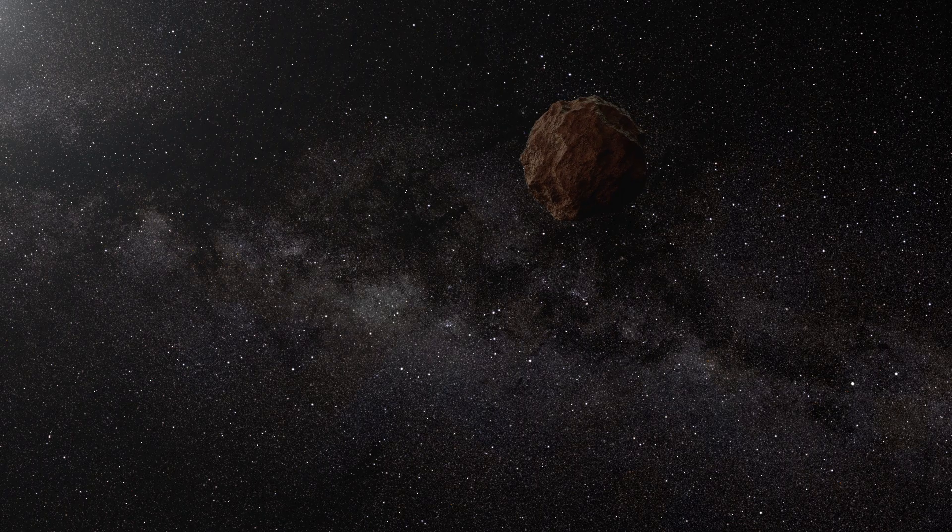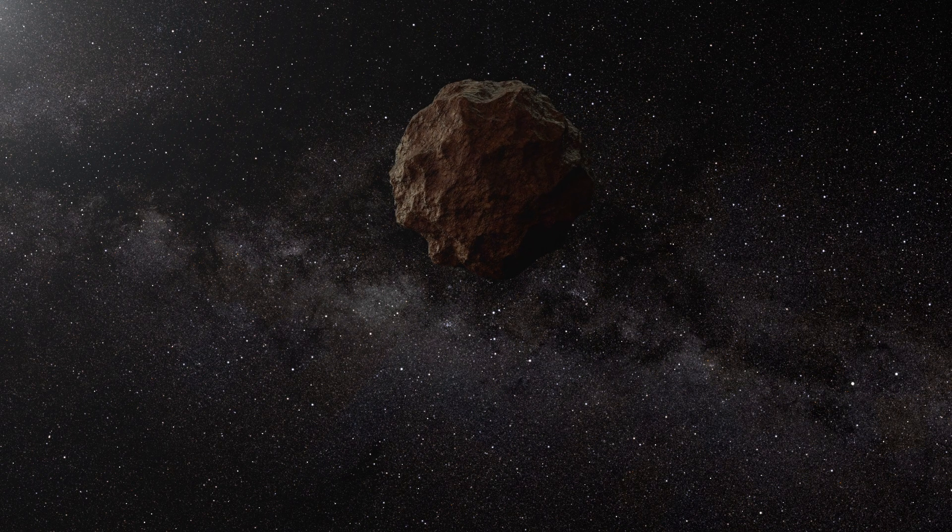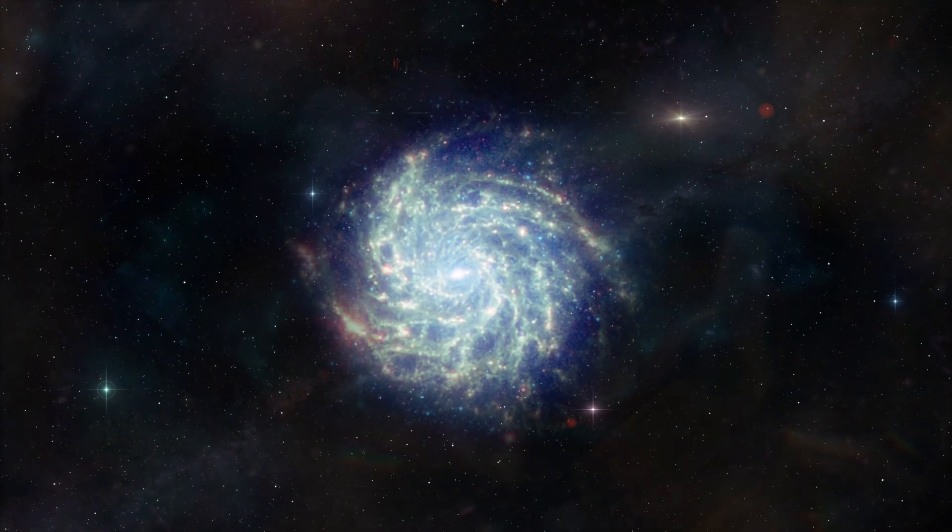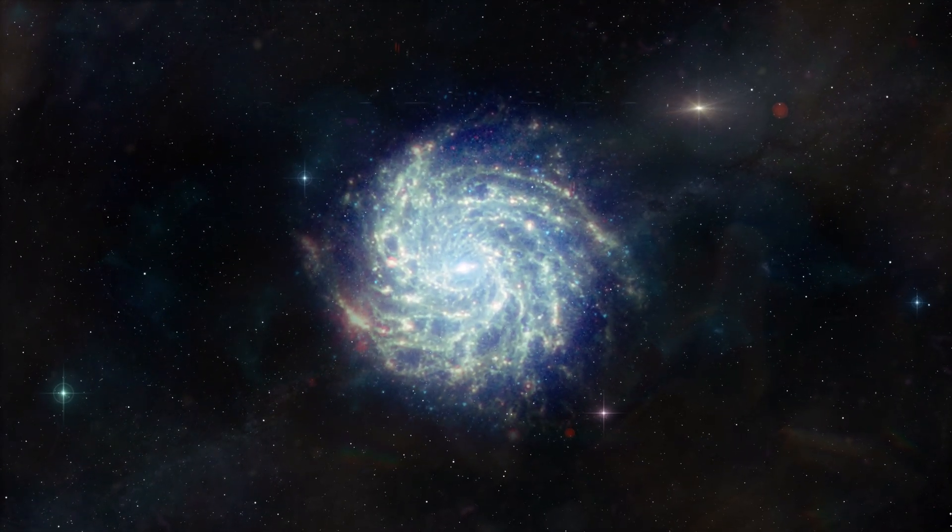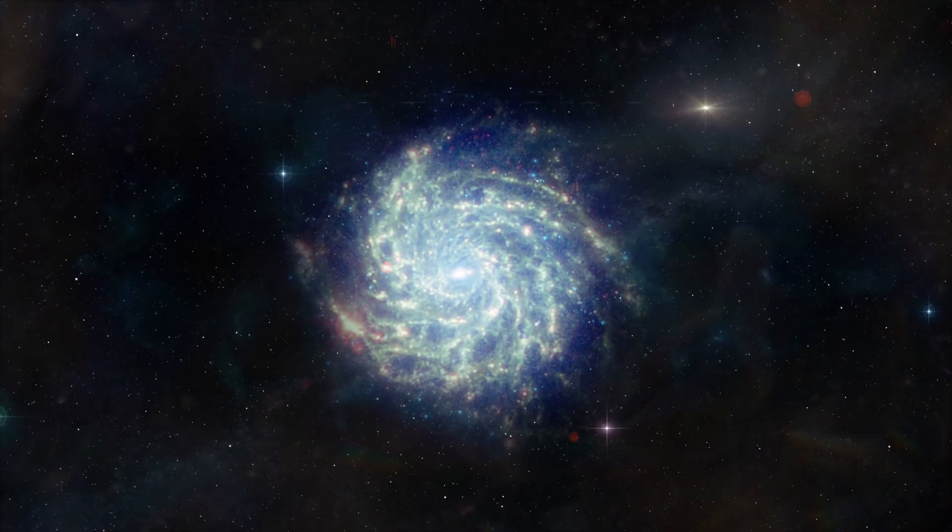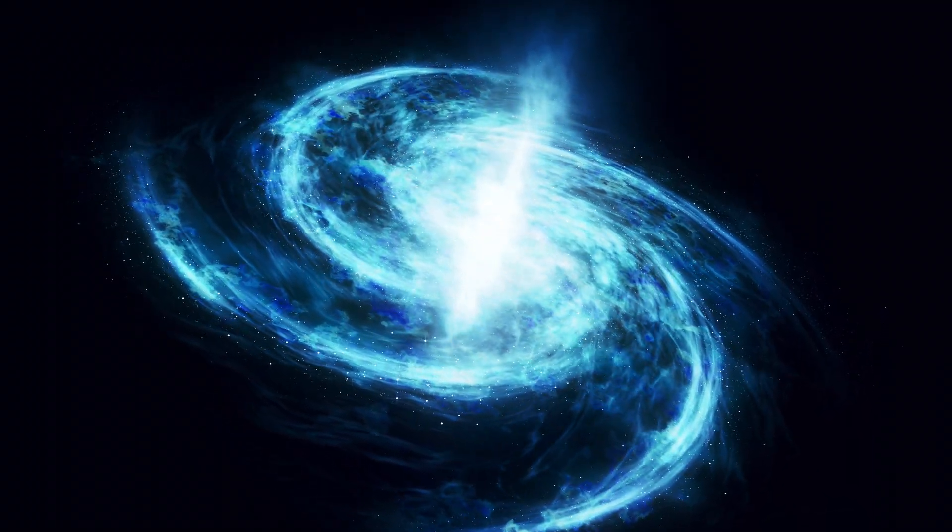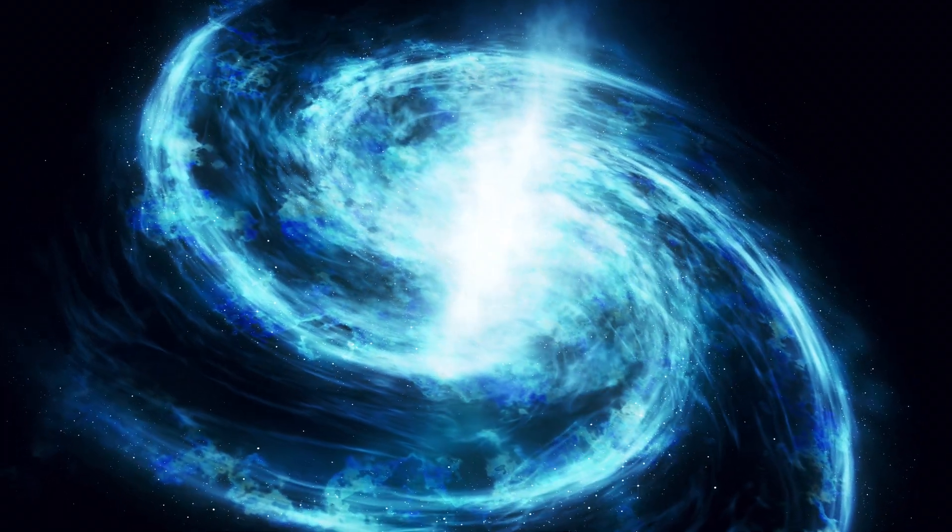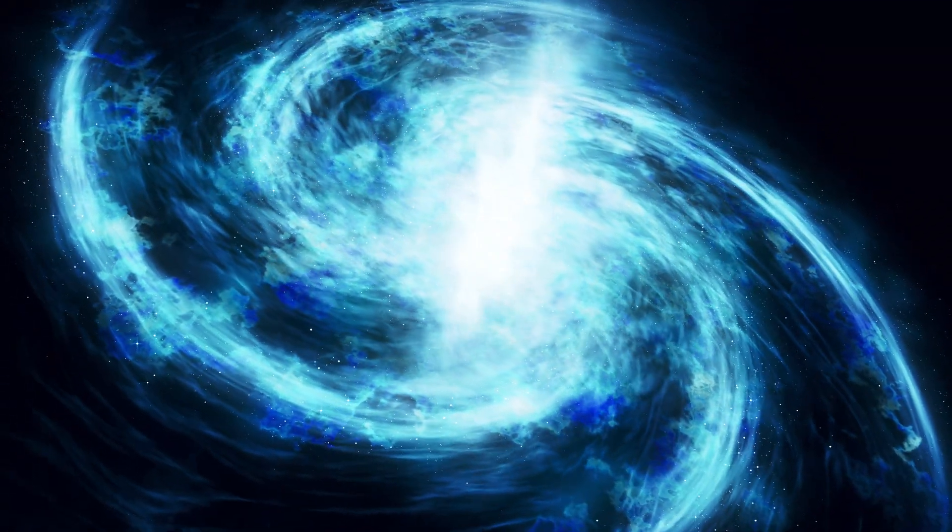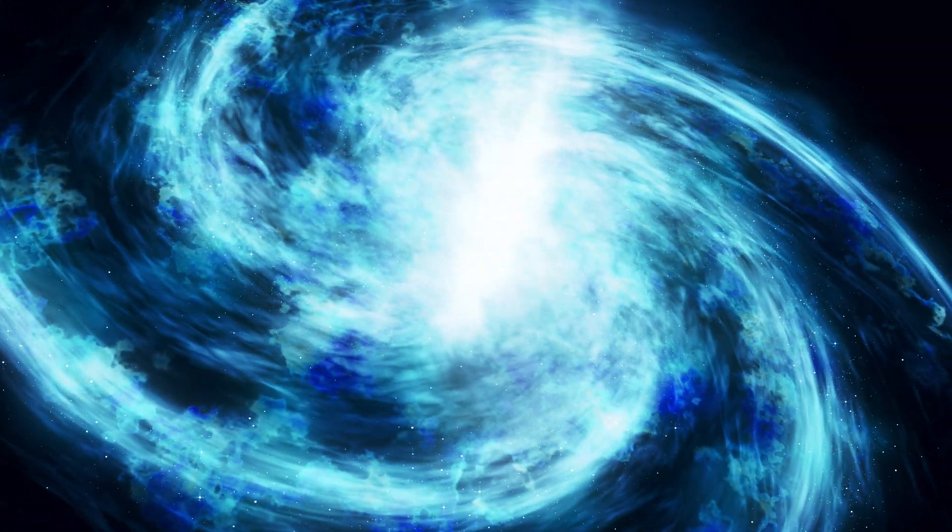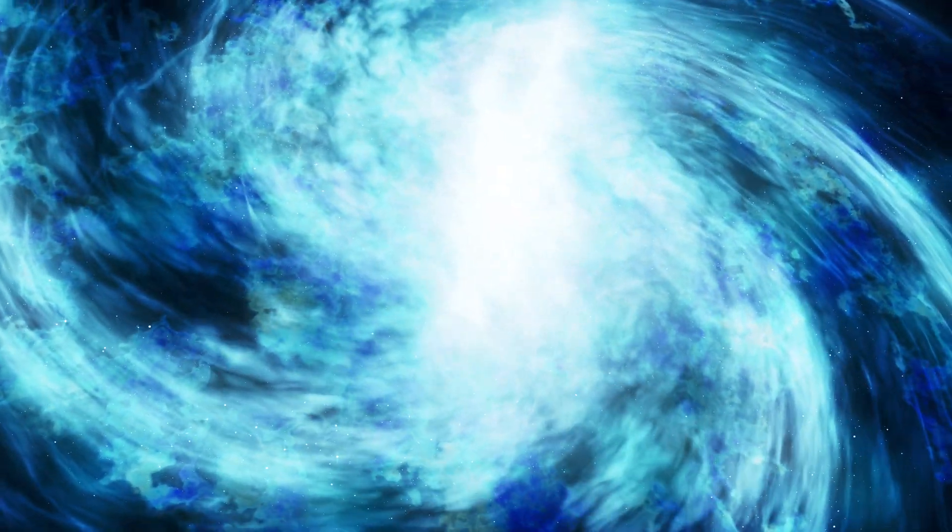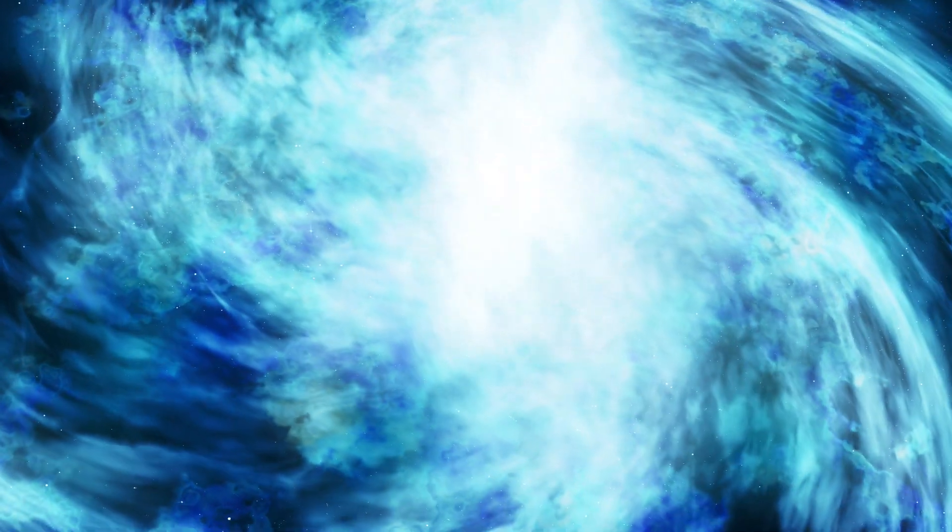When zooming out from the solar system and the Milky Way, a fascinating pattern emerges: the cosmic web, the largest structure in nature. At this scale, entire galaxies appear as tiny points of light, while astronomers observe long, thin filaments of galaxies, dense clusters, and expansive regions of near-emptiness known as cosmic voids.